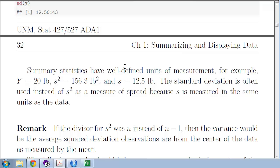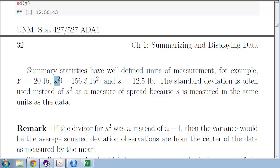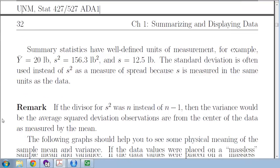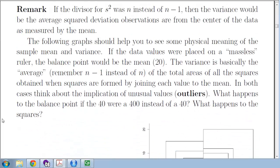Statistics like these almost always have a unit of measurement. y-bar was in pounds — the average was 20 pounds. s-squared is in pounds squared, which is why we typically discuss spread in terms of the standard deviation s, because it is also in pounds. So 12.5 pounds is the spread with a center of 20 pounds — they are in the same units.